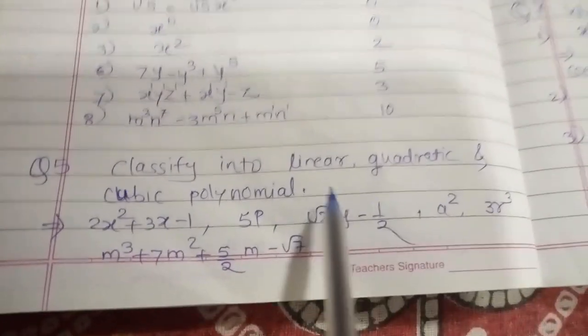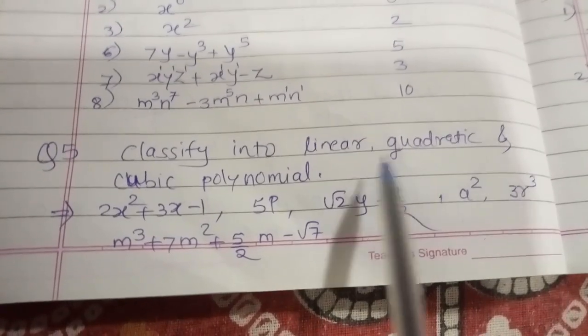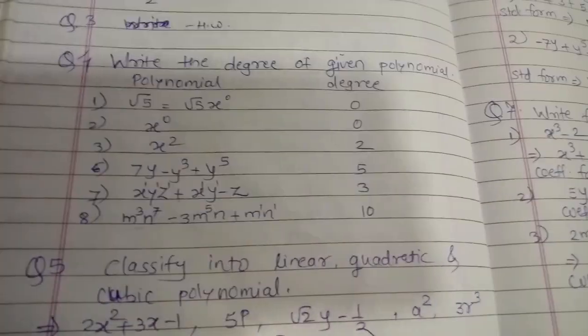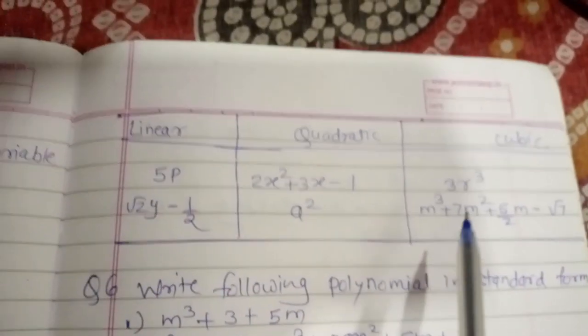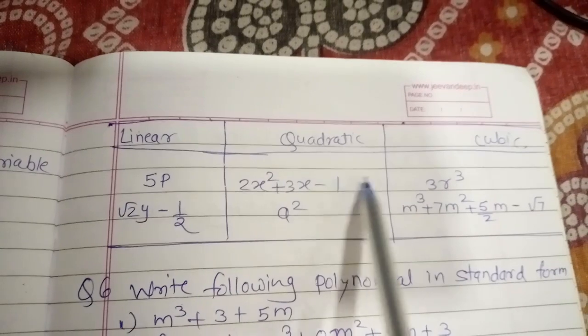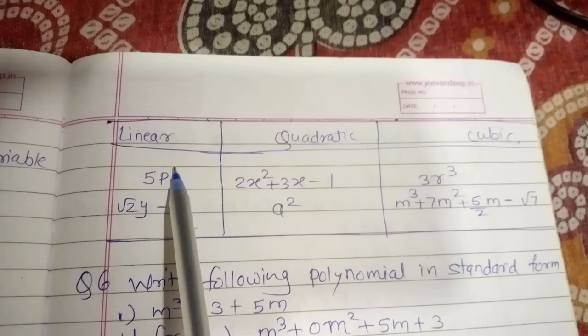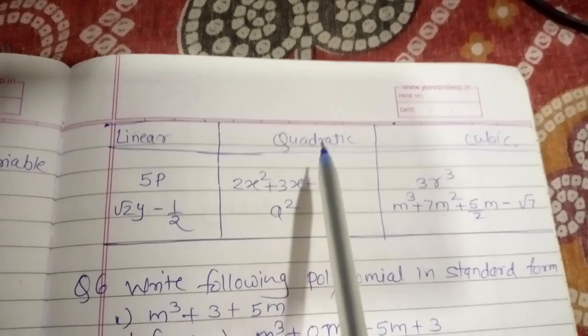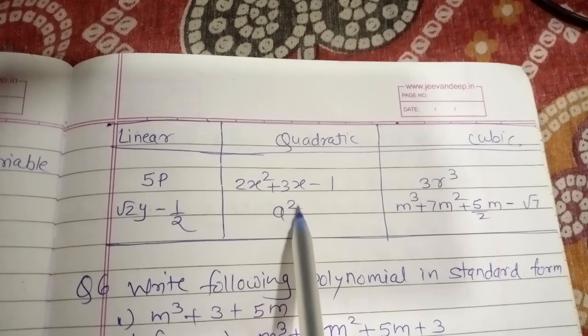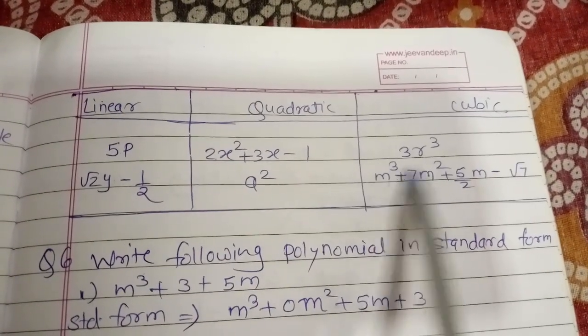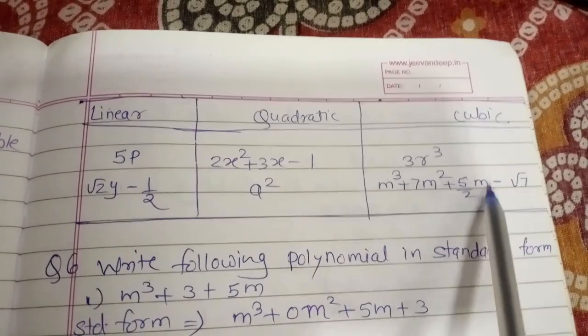Question number 5: classify the given polynomials as linear, quadratic, or cubic. We draw a table with three columns: linear, quadratic, and cubic. Polynomials with degree 1 go under linear, degree 2 under quadratic, and degree 3 under cubic. In this way we can classify all the given examples.